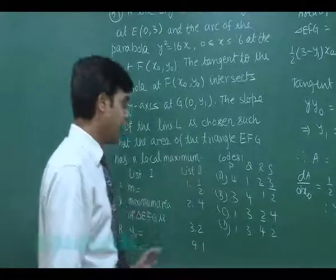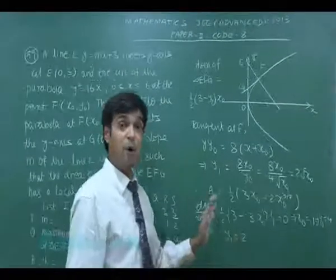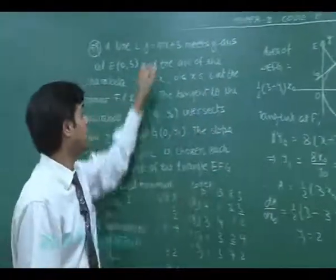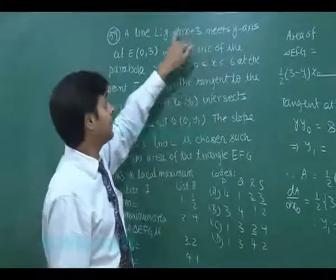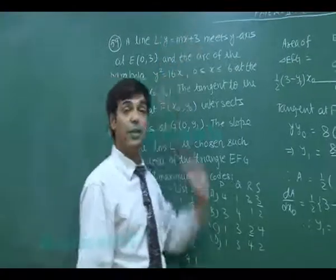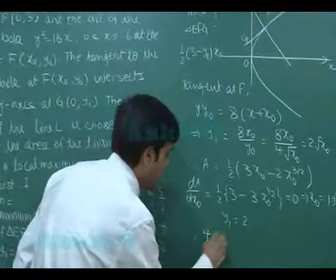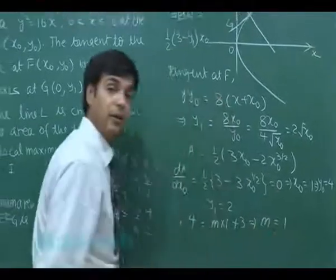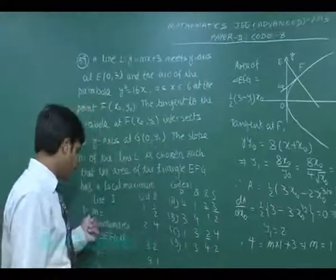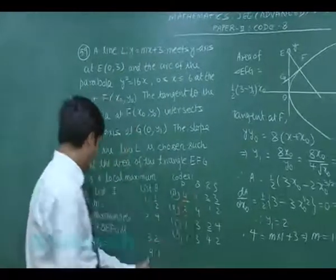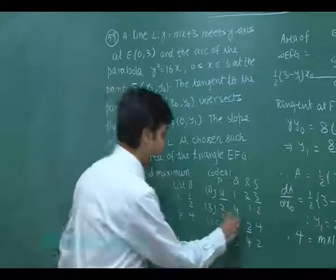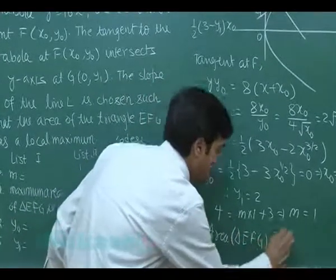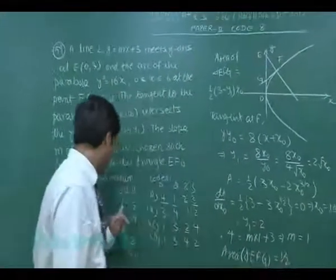Since point F(x₀, y₀) = (1, 4) lies on the line y = mx + 3, substituting gives 4 = m·1 + 3, so m = 1. Thus P is matched with 4 (value 1). The maximum area of triangle EFG is ½·(3 − 2)·1 = ½ square unit, so Q is matched with 1 (value ½). This completes the matching for question 59.